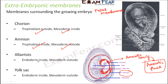The third membrane is allantois, which is a sac-like structure. In case of human beings, allantois is quite small in size and almost non-functional. It is located inside the chorion, so it has mesoderm on the outside and endoderm on the inside.